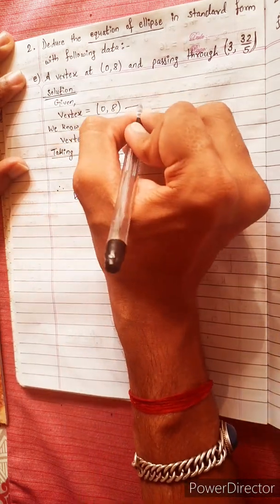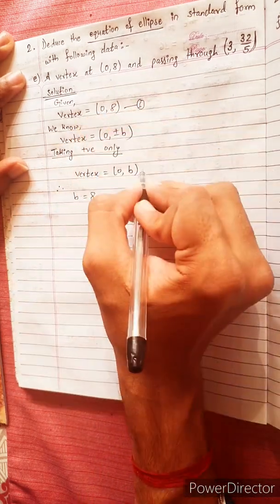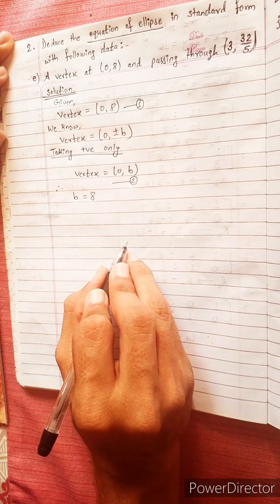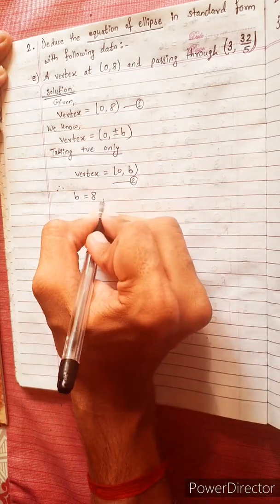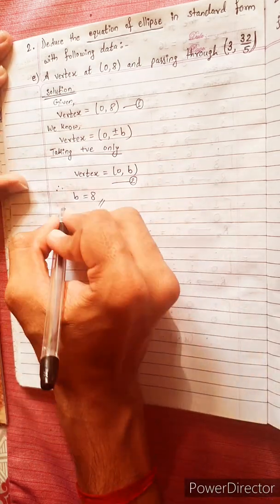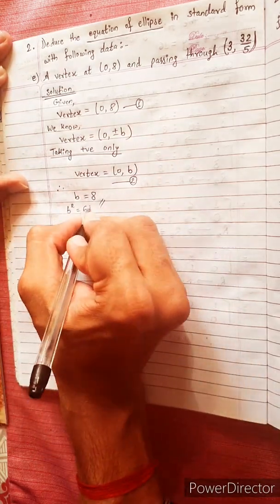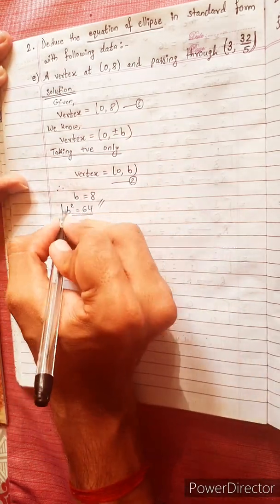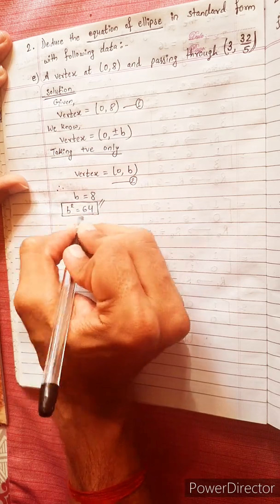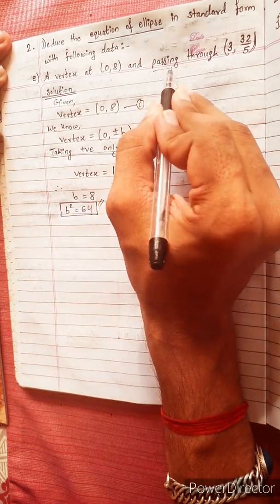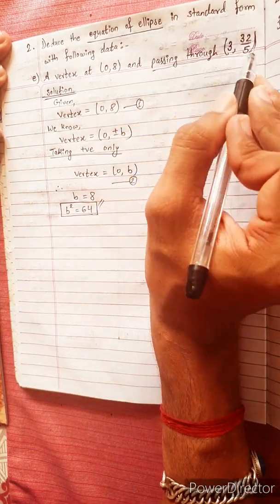Comparing, b equals 8, so b square equals 64. This is an important step. The ellipse is also passing through the point (3, 32/5).